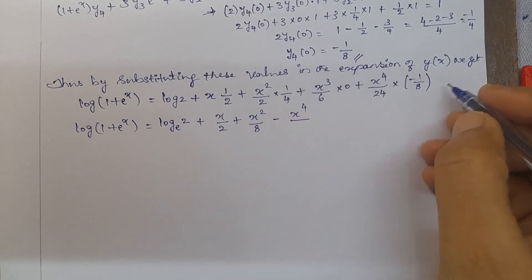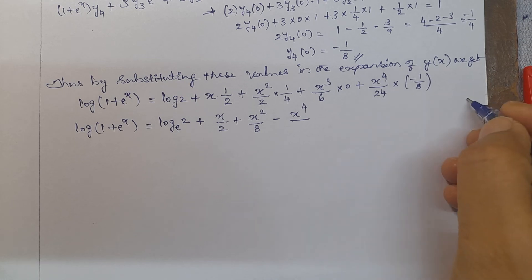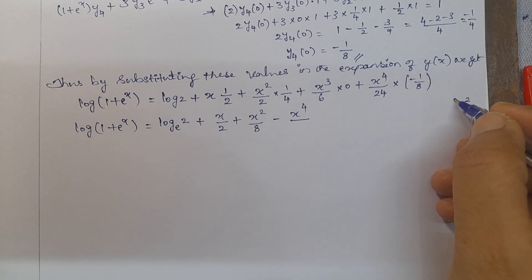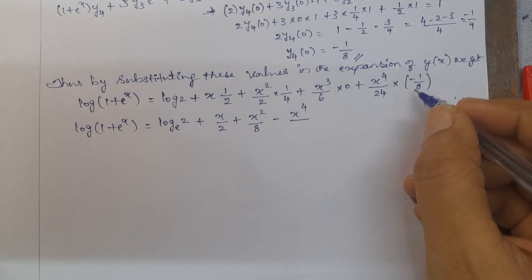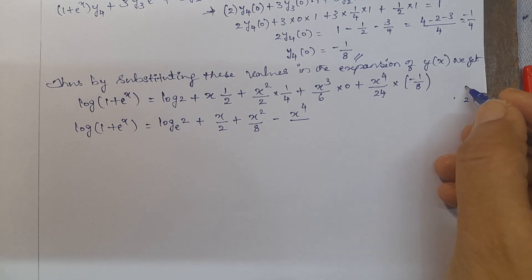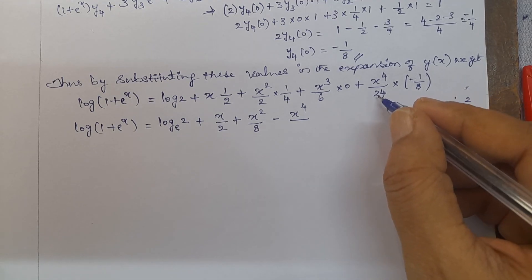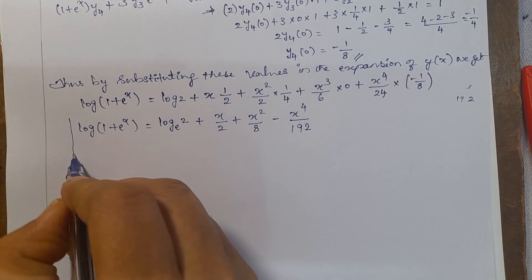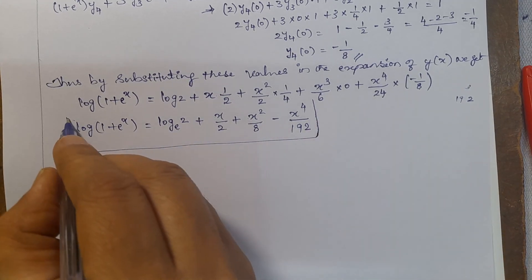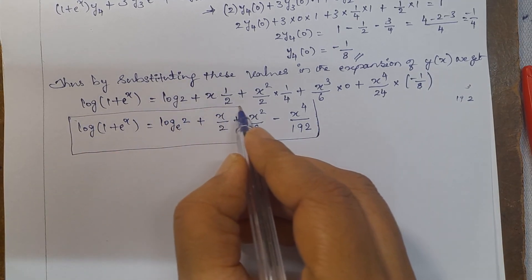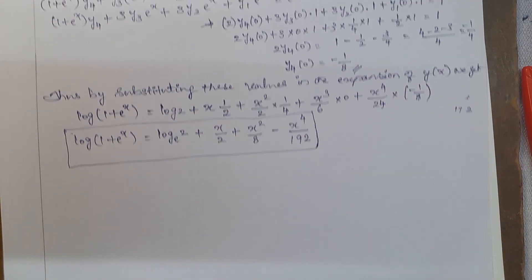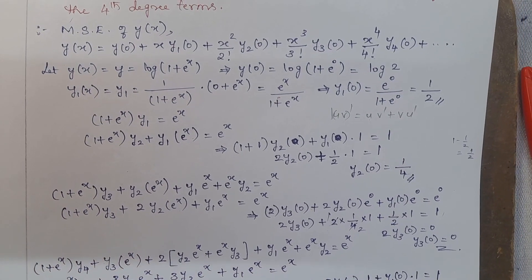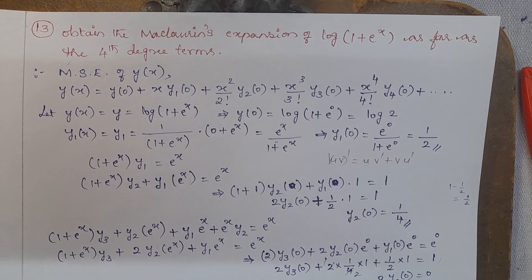So the final answer is: log(1 + eˣ) = ln 2 + x/2 + x²/8 − x⁴/192. This is the Maclaurin's expansion up to the 4th degree terms.